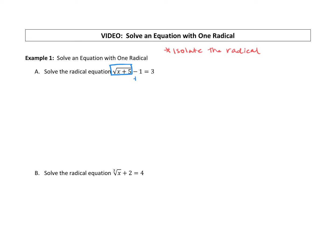So that minus one, we need to add one to both sides to start our solving. So then we have the square root of x plus five is equal to three plus one is four.